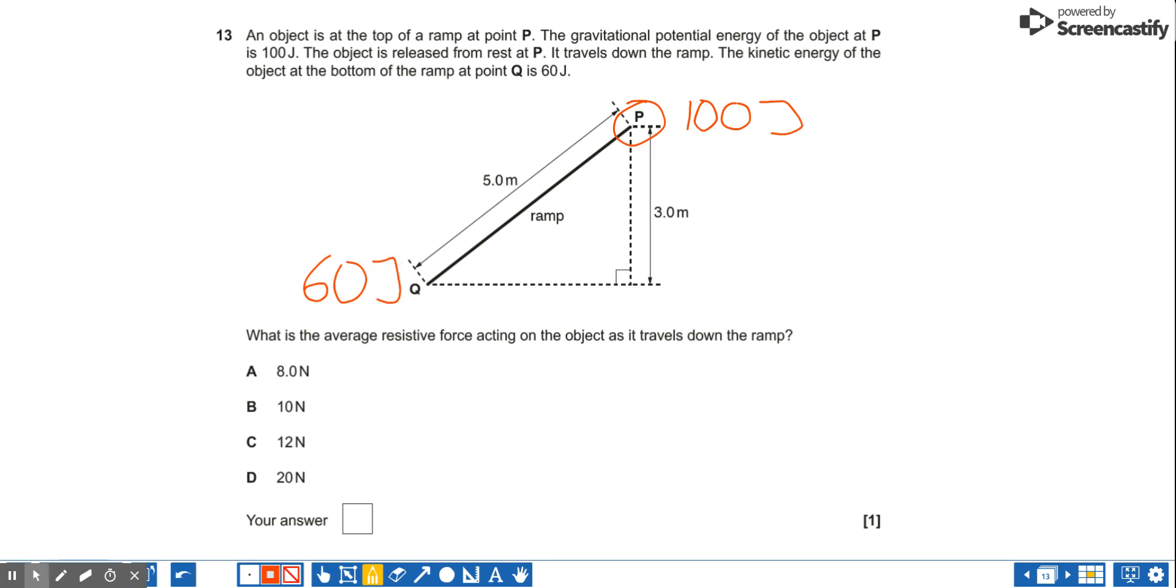What is the average resistive force acting on the object as it travels down the ramp? If there was no resistive force, then the kinetic energy at the bottom of the ramp would be 100 joules.